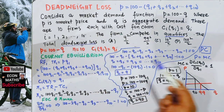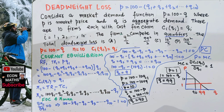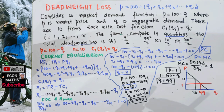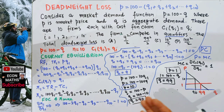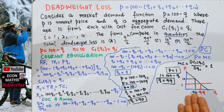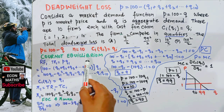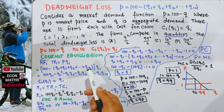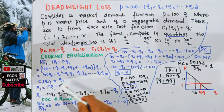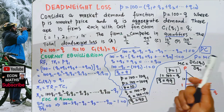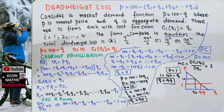We need to compare the Cournot equilibrium with perfect competition, because the very definition of deadweight loss is the economic inefficiency when the market is not producing efficiently. By efficient production, we mean marginal cost pricing — when price equals marginal cost — which happens in a perfectly competitive market. So we compare the Cournot equilibrium quantity and price with the perfectly competitive equilibrium quantity and price.